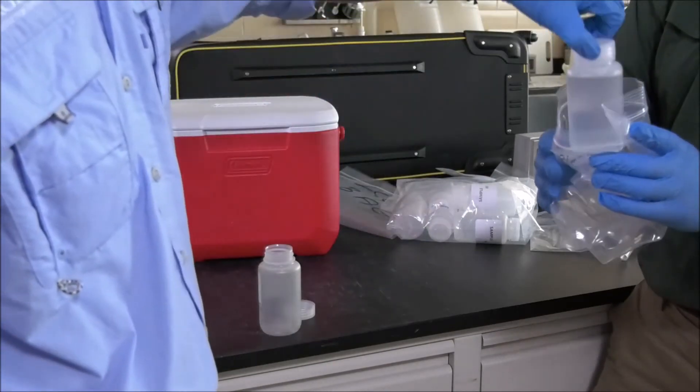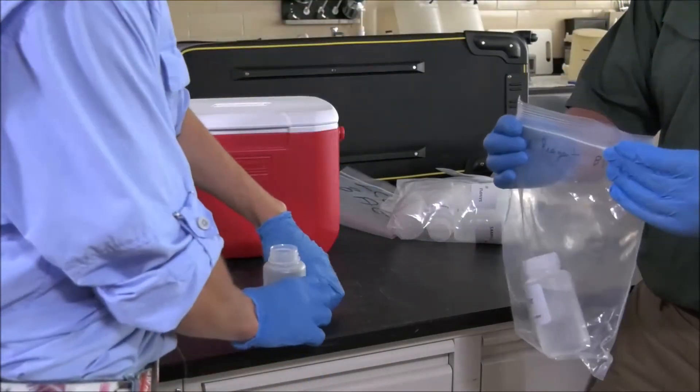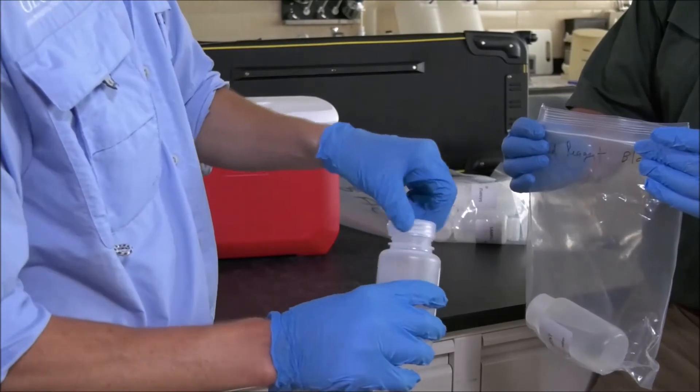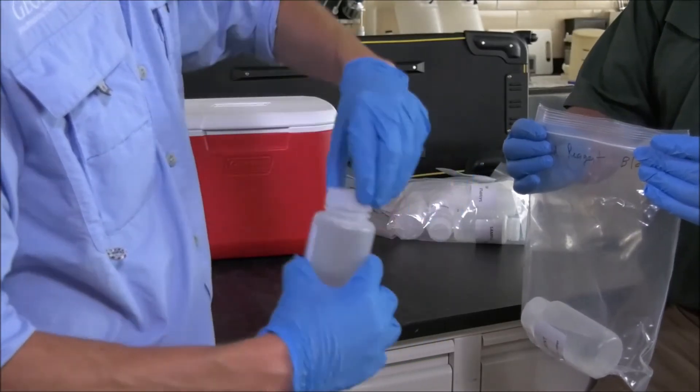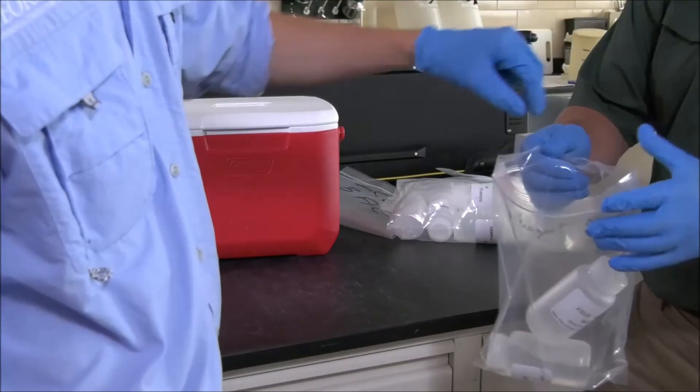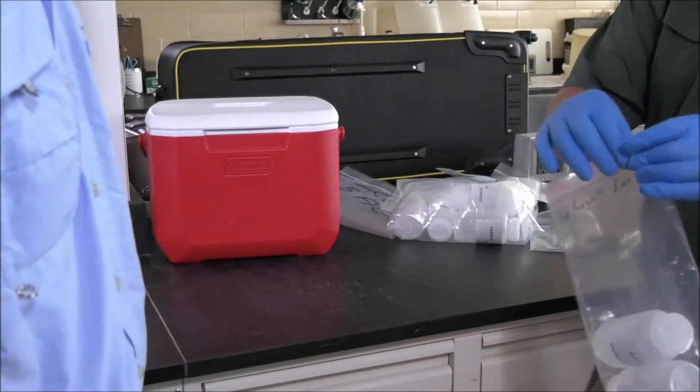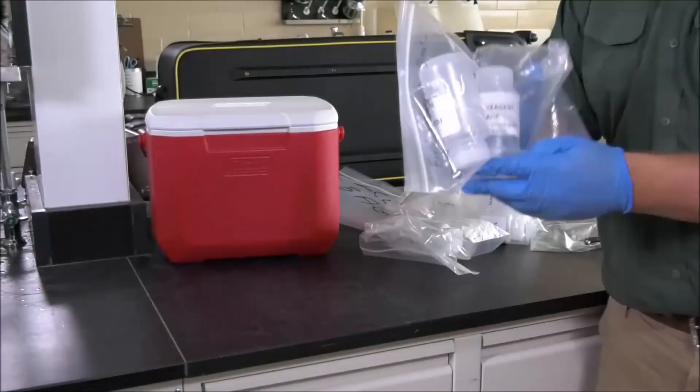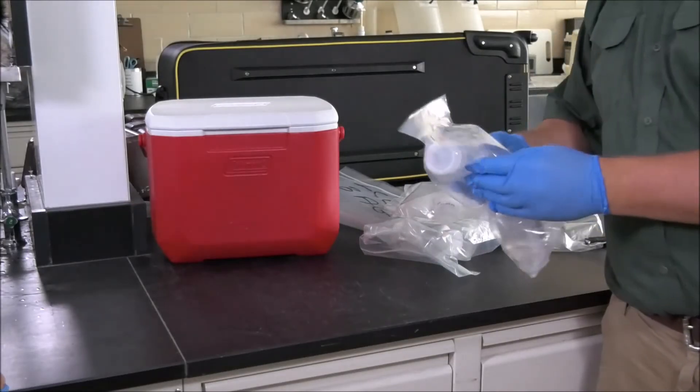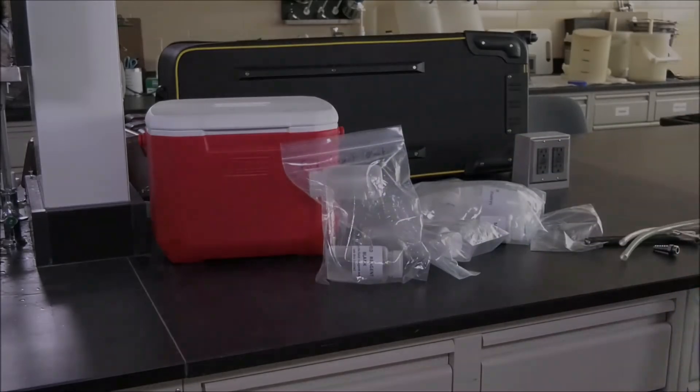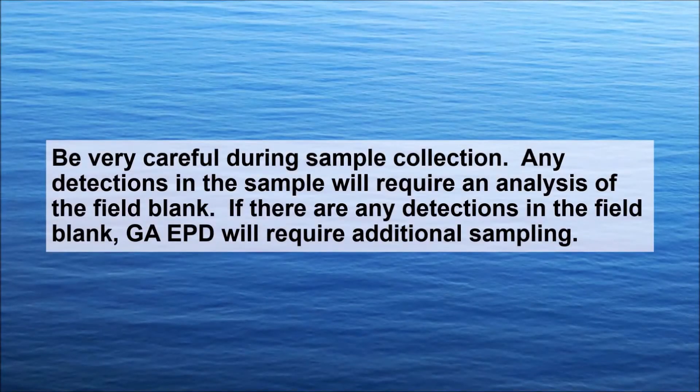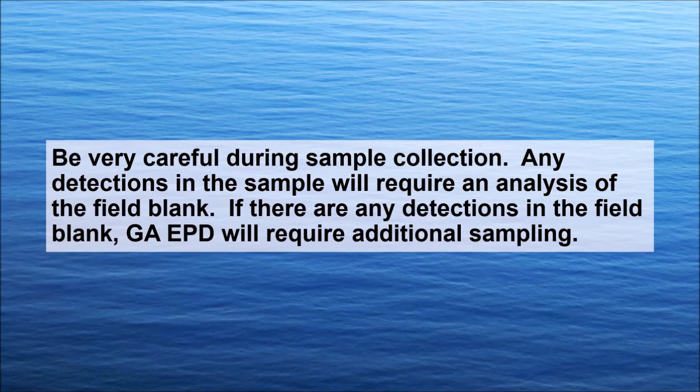As dirty hands is holding the resealable plastic bag open, clean hands will drop all the capped field blank bottles back into the resealable plastic bag they came in. Dirty hands will seal the plastic bag. This same procedure will be repeated with the second set of field blank bottles. Be very careful during sample collection. Any detections in the sample will require an analysis of the field blank. If there are any detections in the field blank, Georgia EPD will require additional sampling.